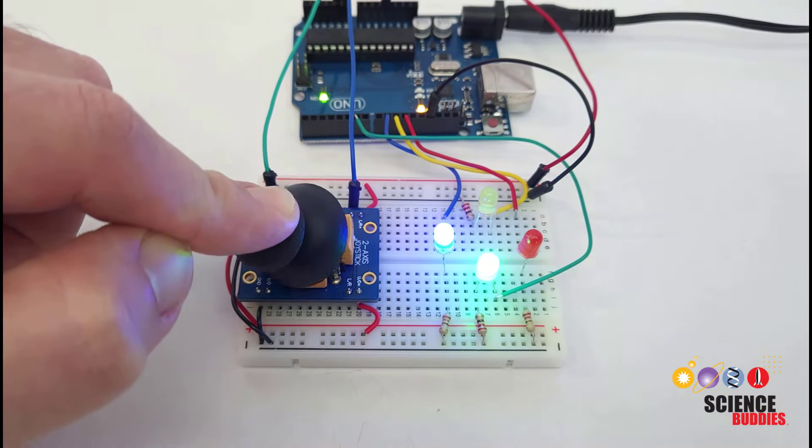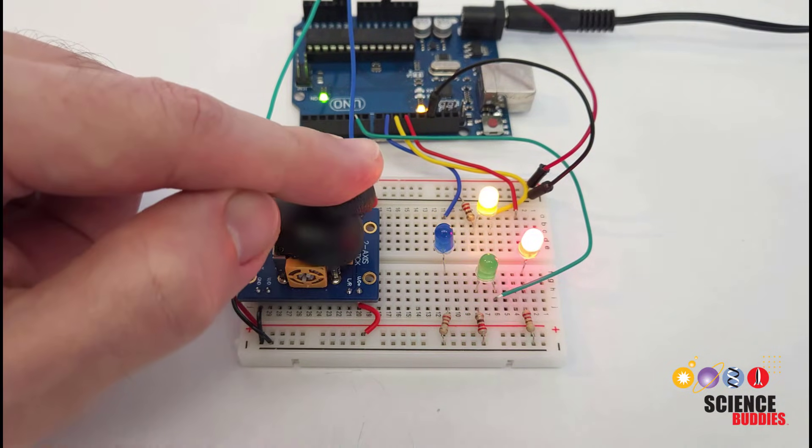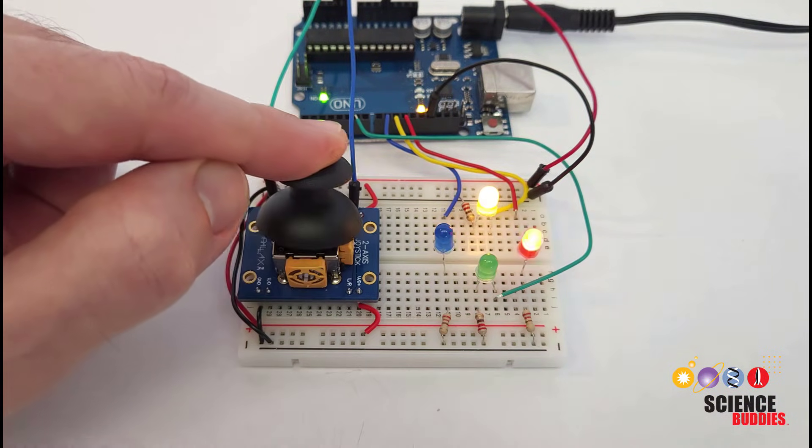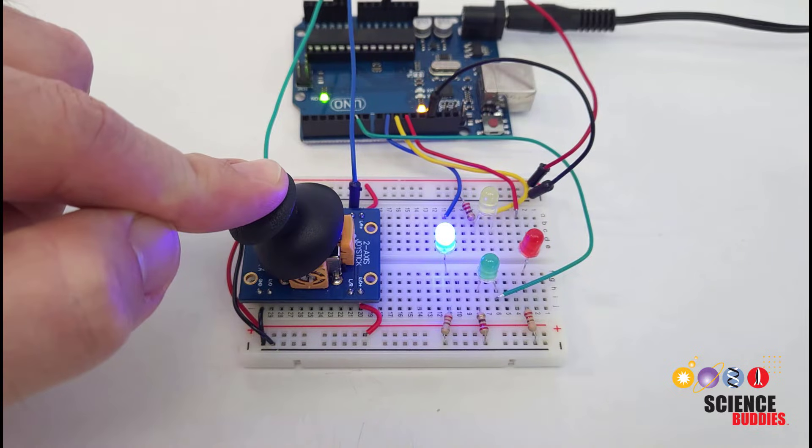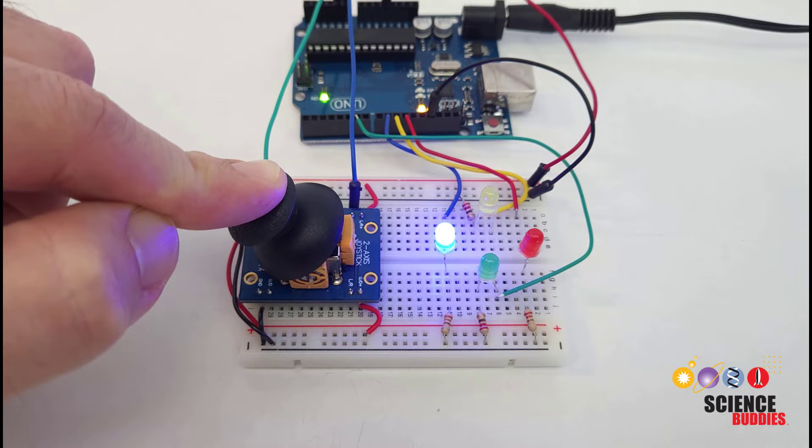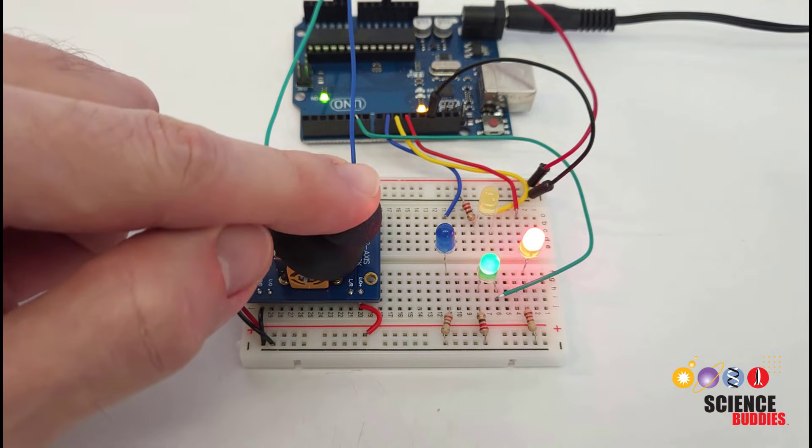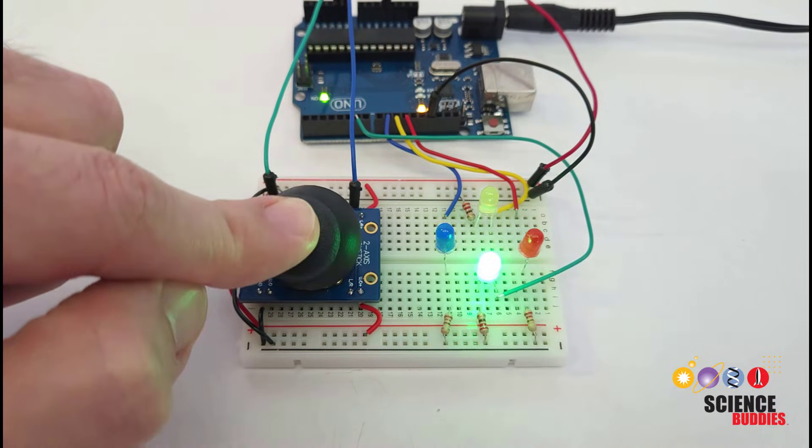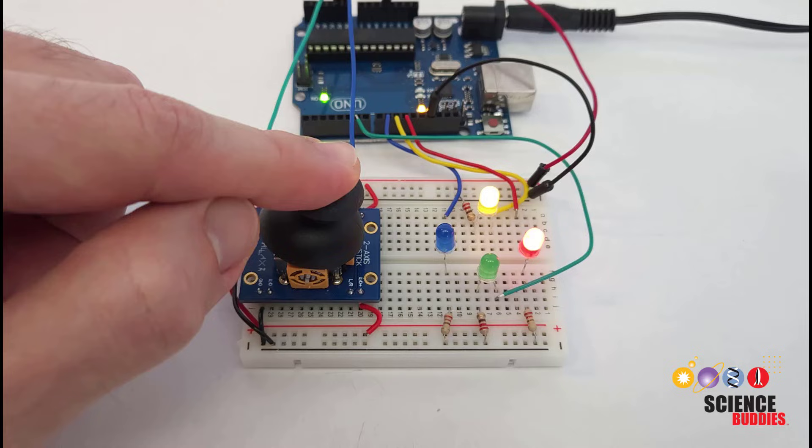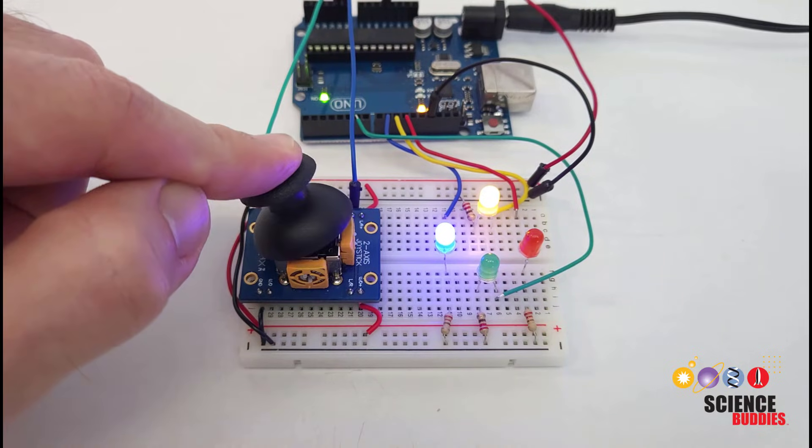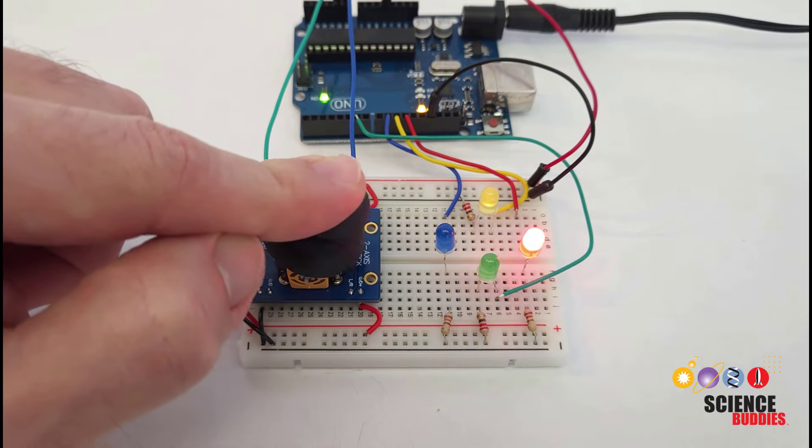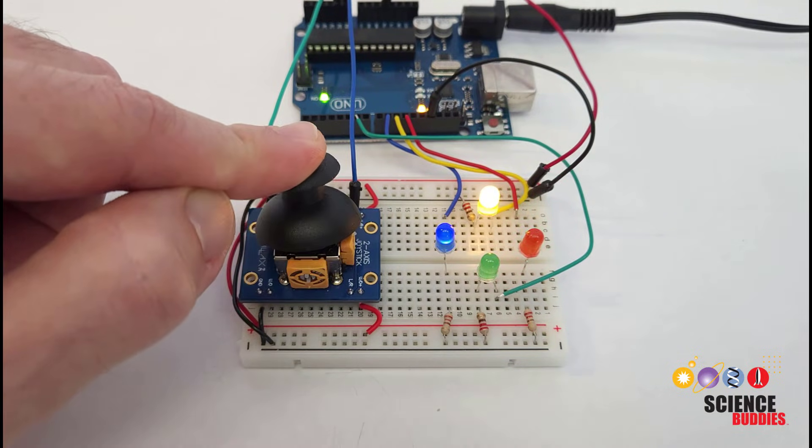Of course once you know how to get readings from your joystick you'll want to use it to do something interesting. For example here I have it programmed to control the brightness of these four LEDs. When I push the joystick down which is to the left in this video since I have it rotated 90 degrees it lights up the blue LED. When I push it up it lights up the red LED. When I move it left and right it controls the yellow and green LEDs and as you can see when I move it diagonally it can light up two of the LEDs at the same time. The brightness of the LED is proportional to how far I push the joystick in the given direction.